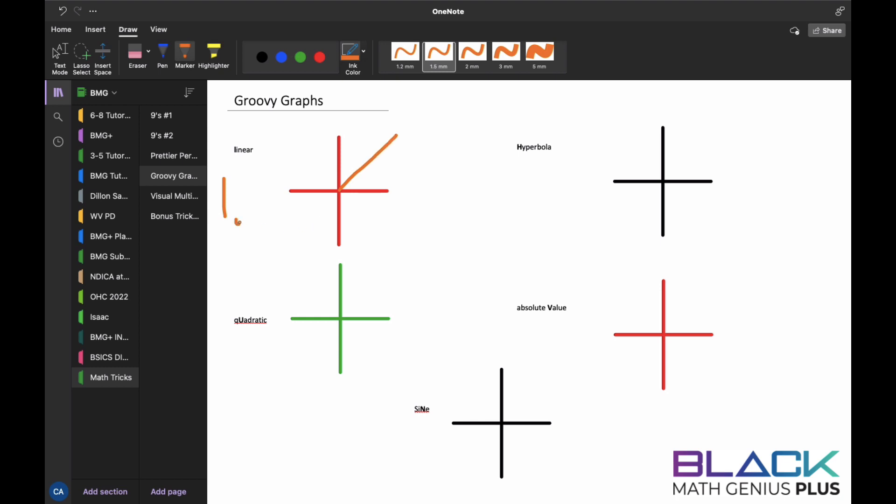The graph of a linear function looks like that, a line. So a linear function is something of the form y equals, let's say, 2x minus 3. Linear. The power of the x variable is 1. We don't write the 1.